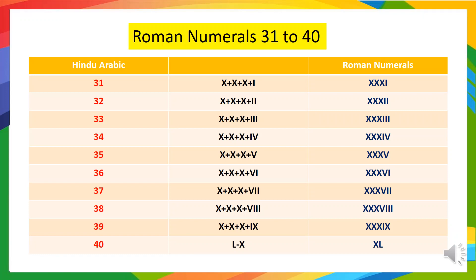Here IV represents 4. 35 means 10 plus 10 plus 10 plus 5, so we will write it as XXXV. 36 means 10 plus 10 plus 10 plus 6, so we will write it as XXXVI. 37 means 10 plus 10 plus 10 plus 7, so we will write it as XXXVII. 38 means 10 plus 10 plus 10 plus 8, so we will write it as XXXVIII. 39 means 10 plus 10 plus 10 plus 9, so we will write it as XXXIX. IX represents 9.